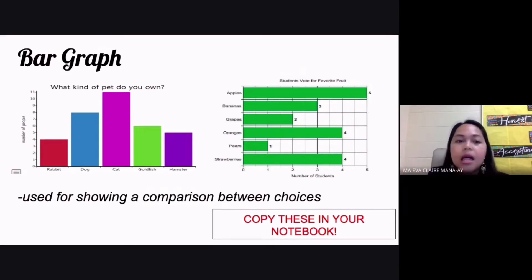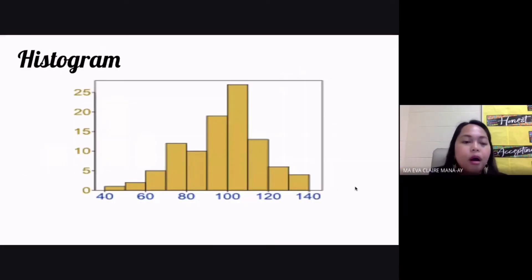There is a special type of bar graph which you call a histogram. This is a special type of bar graph where the bars are touching each other, no space between the bars.